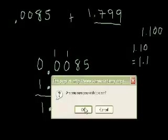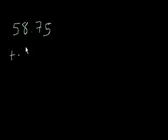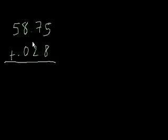Let's do another problem. So 58.75 plus 0.028. Now if you saw a problem like this written in this format, your temptation might be to immediately start adding. Add the 5 to the 8, the 7 to the 2, the 8 to the 0, and then just bring down the 5, or something of that nature, and you would be wrong.